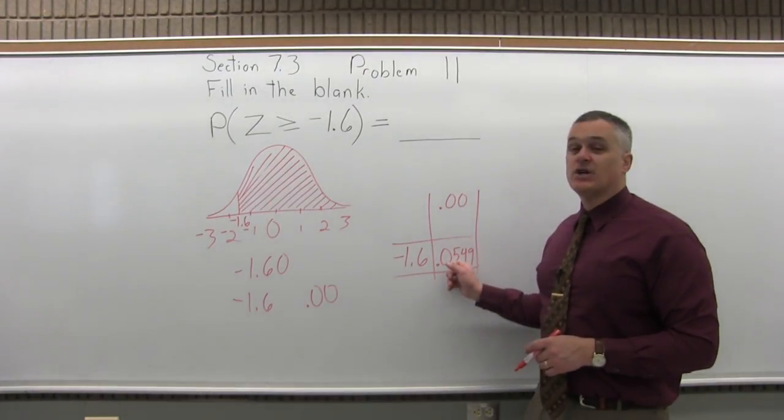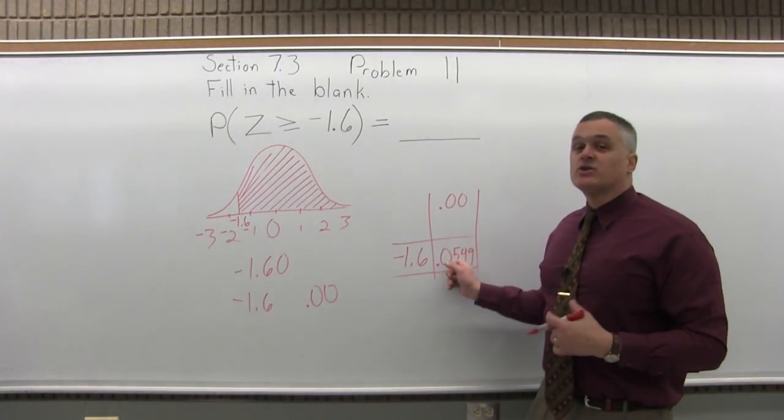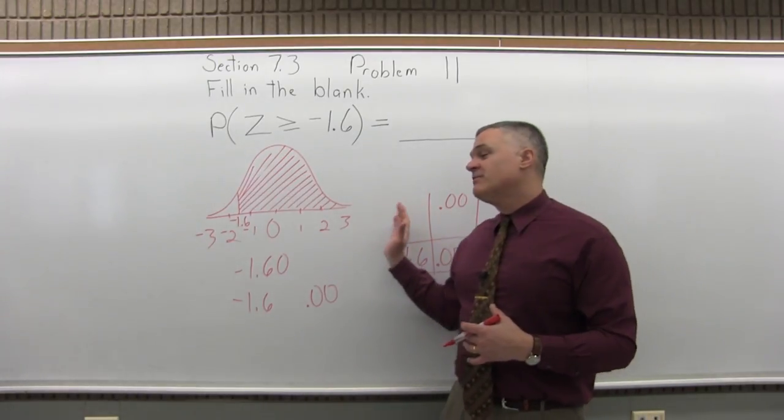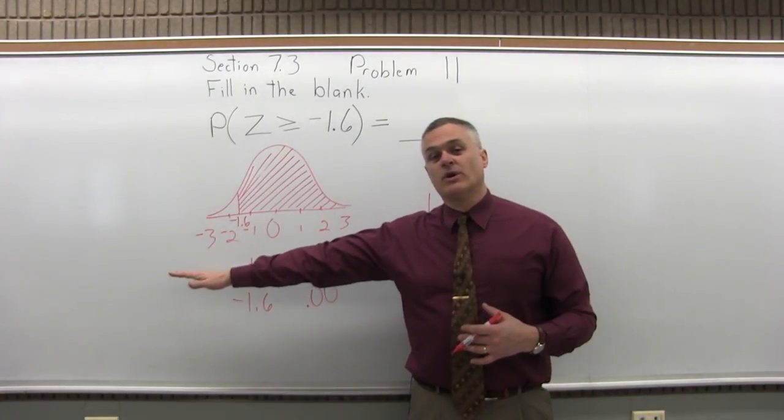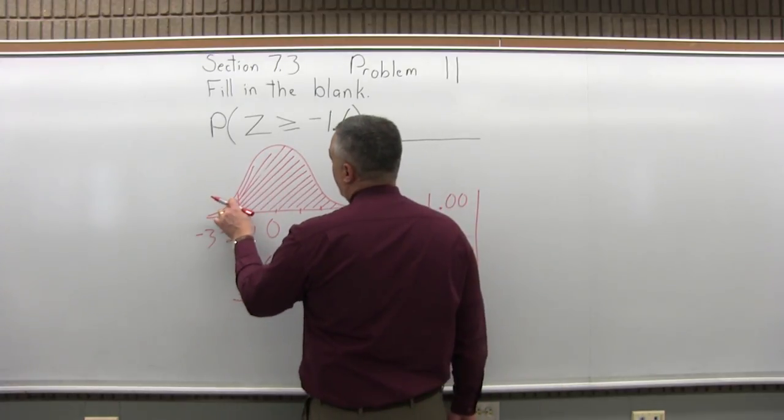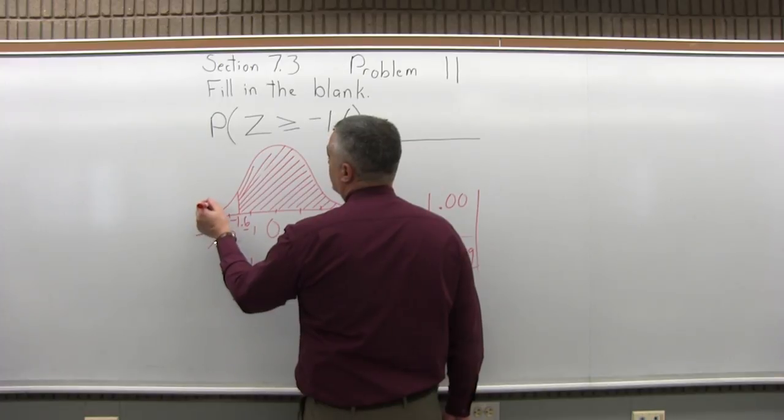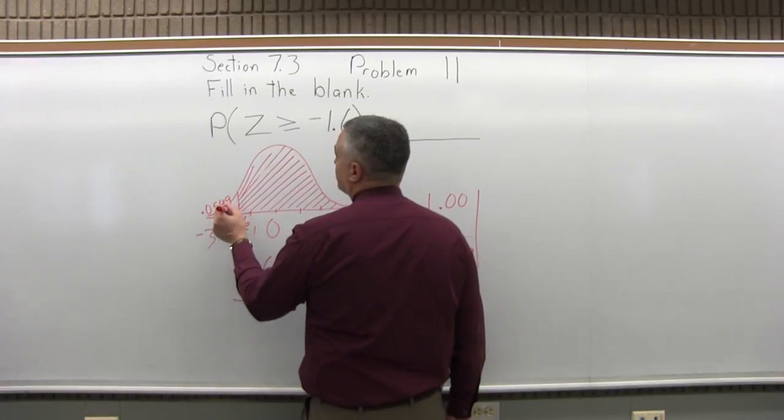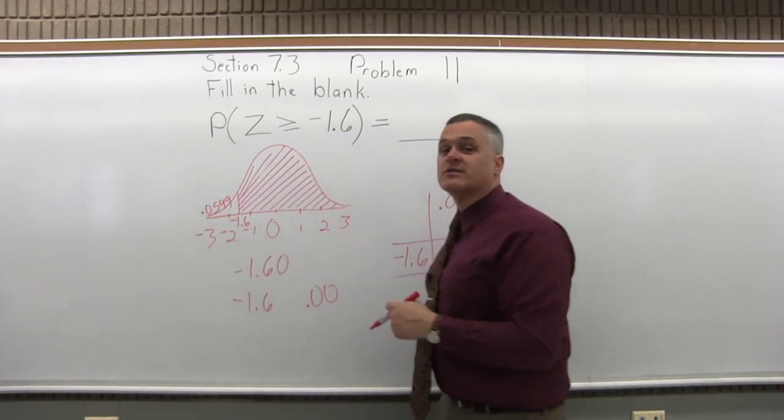Now that's not the answer. The chart is only set up to tell us the probability of being to the left of what we look up. So we looked up negative 1.6, and I can see that blank area that I'm not interested in has an area of point zero five four nine.